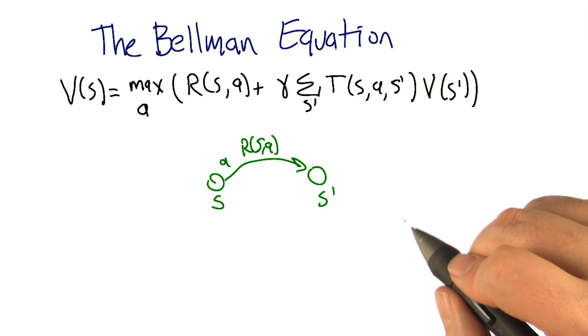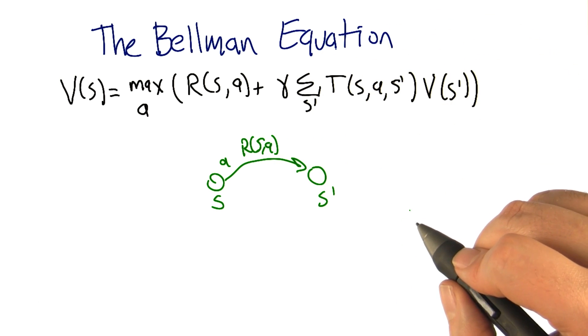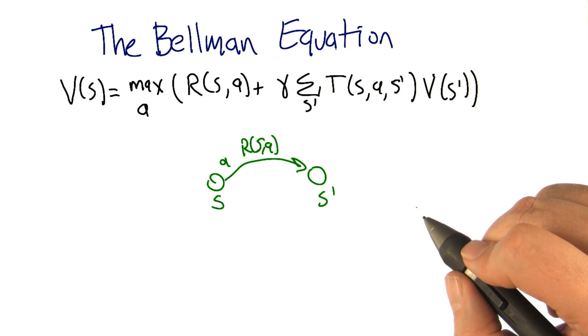And then we land in some new state S prime. I guess that is different than how you were talking about it before. Yeah, but when we went over the definition of an MDP, I did point out that you could think of reward as a function of state, or as a function of state in action, or as a function of state action in next state. And they were kind of all mathematically equivalent.